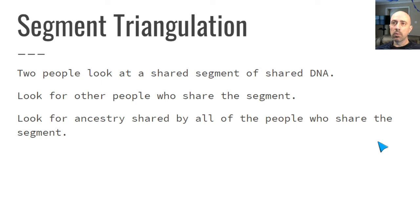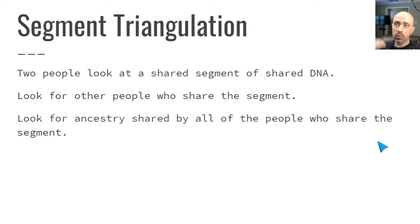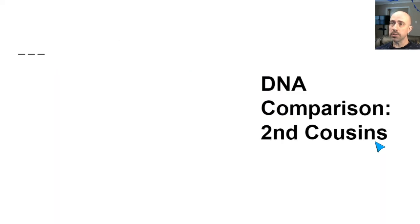Segment triangulation is basically this process: two people look at a segment of DNA that they share, then go forward to look for other people who share that segment. The next step is to look for ancestry shared by all of the people who share that segment of interest. We'll get into the details of how we do this.